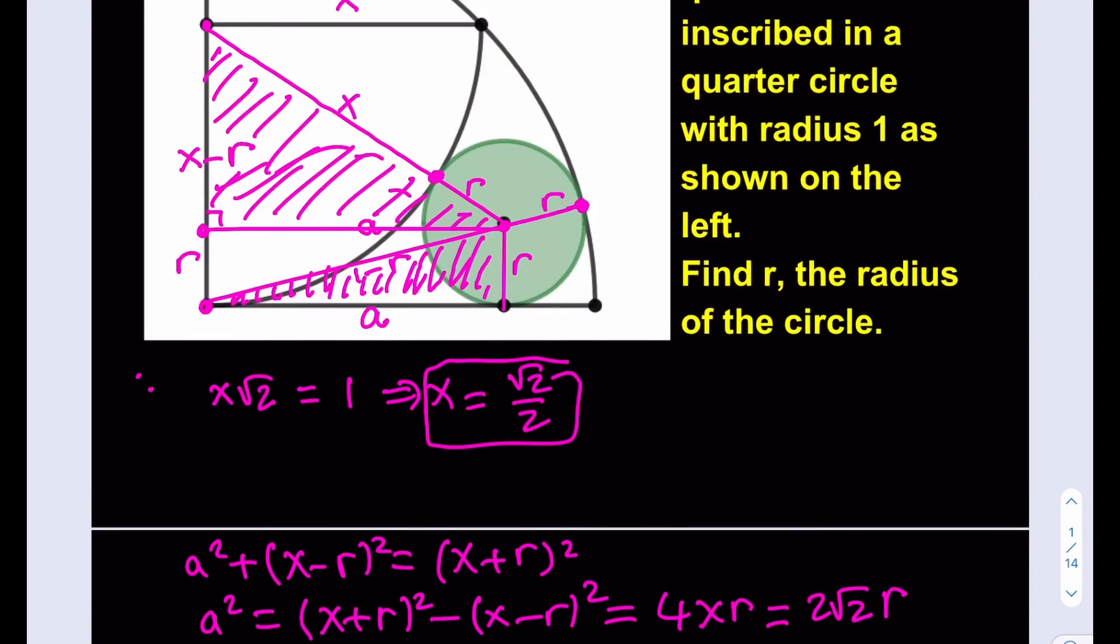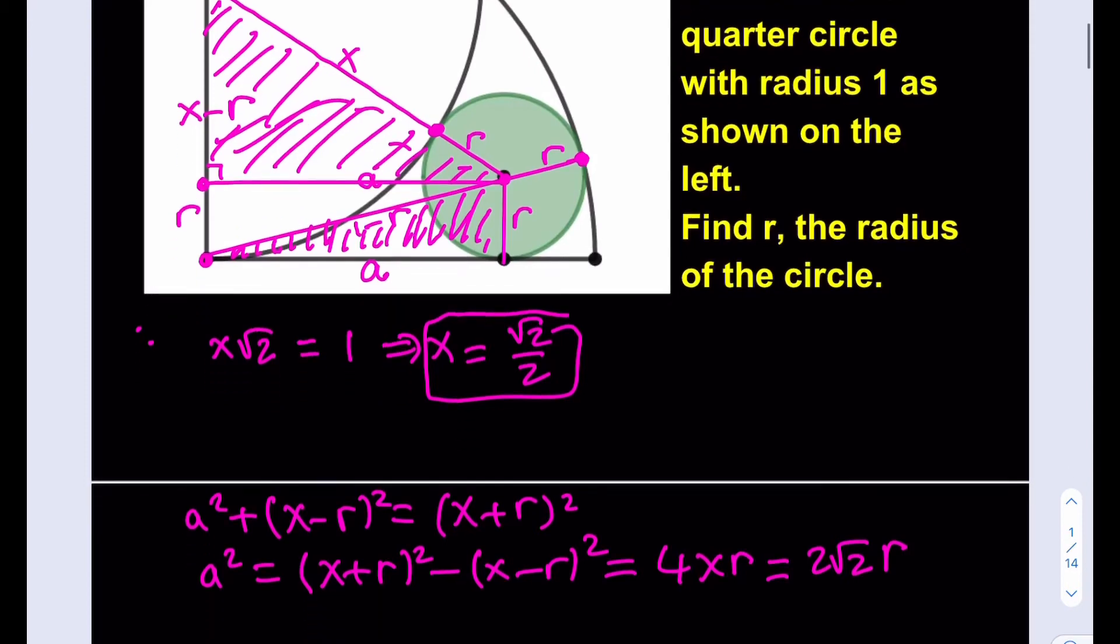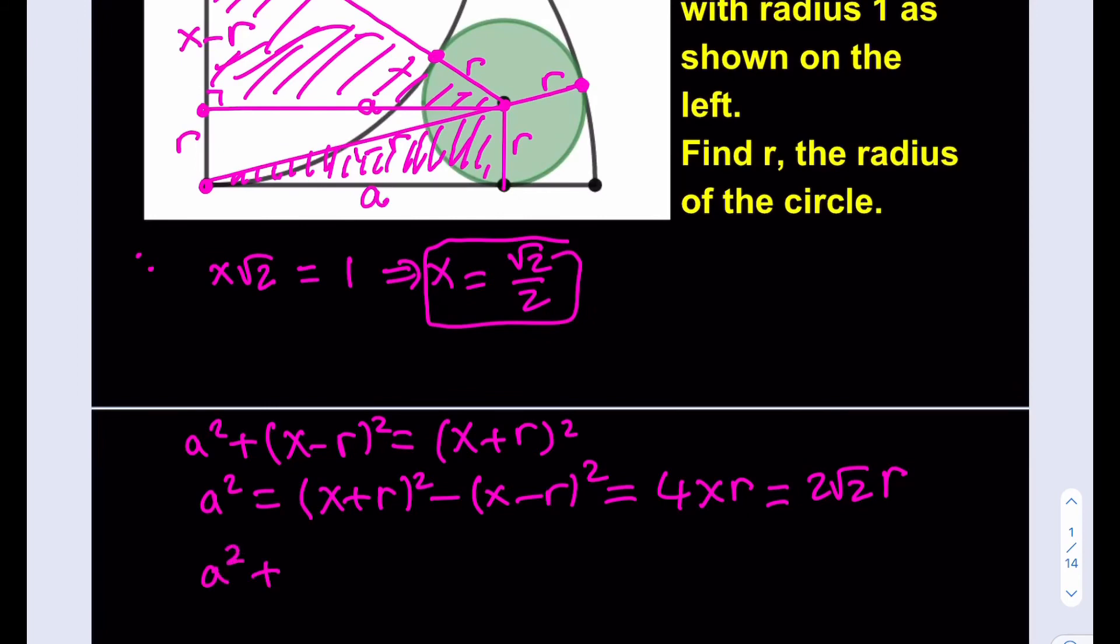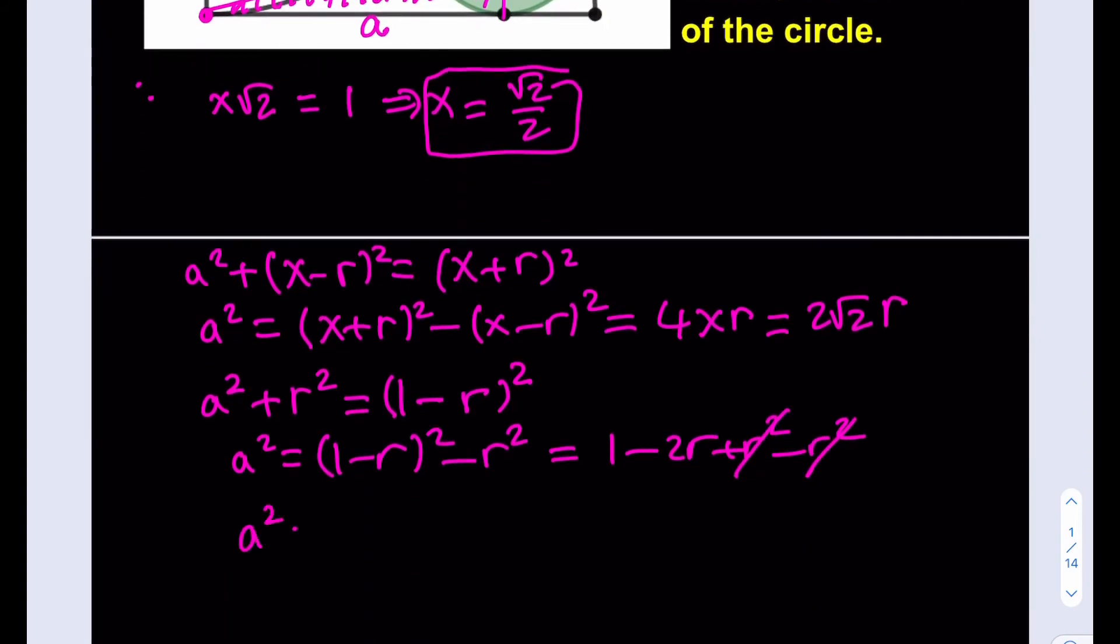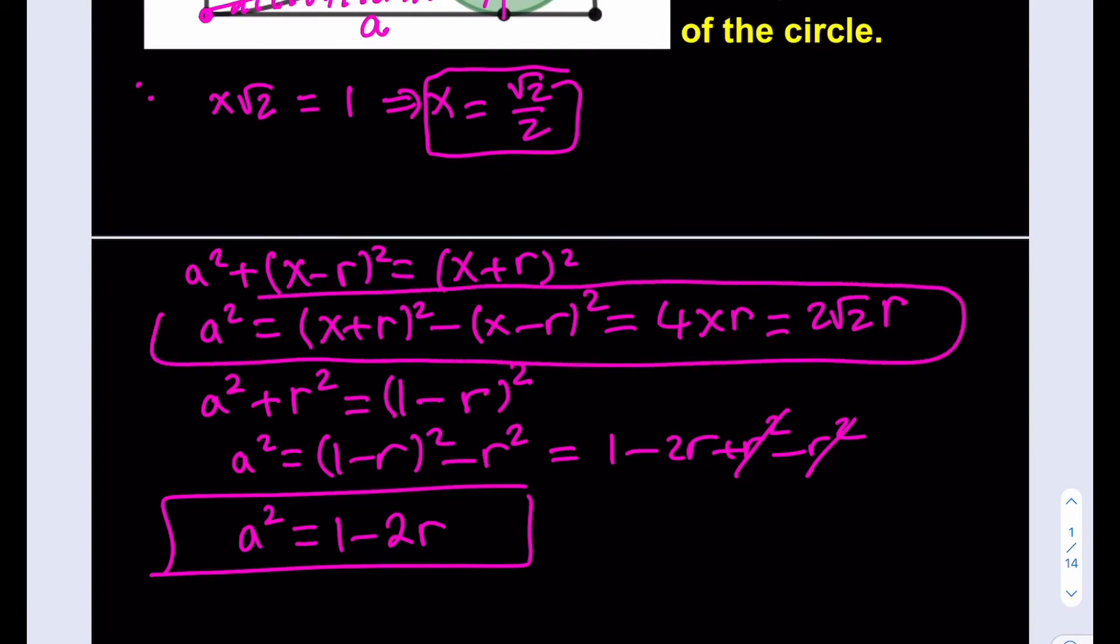From the bottom one, we can actually go ahead and use the Pythagorean theorem again. That's going to give me a squared plus r squared is equal to 1 minus r quantity squared. We can just go ahead and simplify this by expanding the right-hand side. This is going to be 1 minus 2r plus r squared minus r squared. They cancel out. And from here we get a squared is equal to 1 minus 2r. Isn't that beautiful? I got the a squared twice.